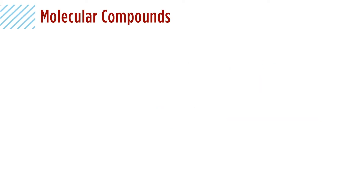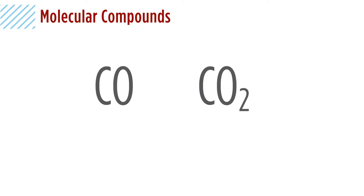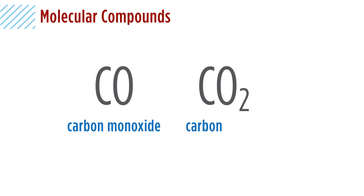Now let's look at some molecular compounds. If we look at carbon with one oxygen and carbon with two oxygens, using the ionic naming system would just give us 'carbon oxide' for both — but we have two different forms because we're sharing electrons, not forming cation/anion pairs. So for molecular compounds with covalent bonds, we use prefixes. CO has one oxygen, so we use mono- to get carbon monoxide. CO2 has two oxygens, giving us carbon dioxide. We have to be explicit about the numbers using prefixes.